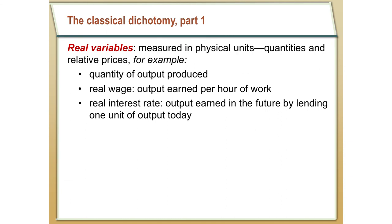The last topic is the classical dichotomy — putting it all together theoretically. Real variables are measured in physical units: real GDP is the quantity of stuff we're producing, the real wage is how much we earn in terms of output being produced, the real interest rate is the output earned in the future by lending one unit of output today. All of these things are in physical quantities.